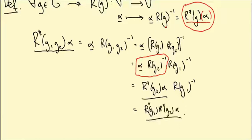Okay so now just take the underlines off, get rid of the alphas, and you've got precisely the expression you want: R star G_1 G_2 equals R star G_1 R star G_2. So this is a representation.